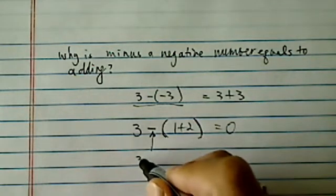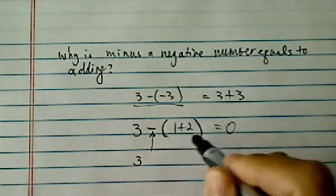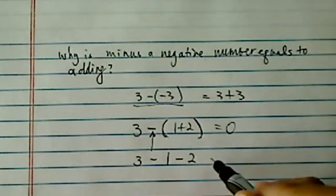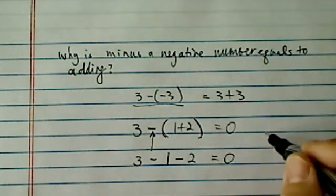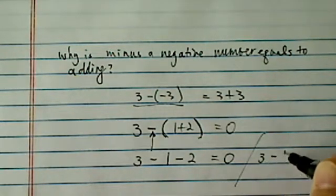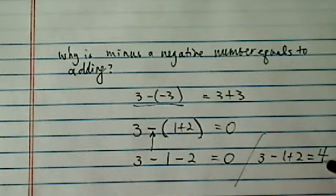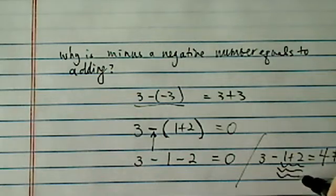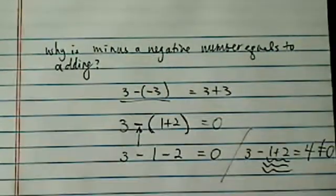So let's take a look at this one. When we have a minus sign in front of the parentheses, we need to change the sign inside. Otherwise, we're not going to get 0. Take a look. 3 minus 1 plus 2, that's going to be 4. That's not equal to 0 if I didn't change the signs inside the parentheses.